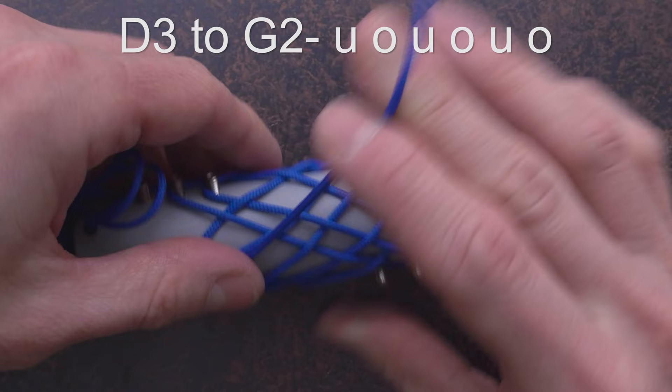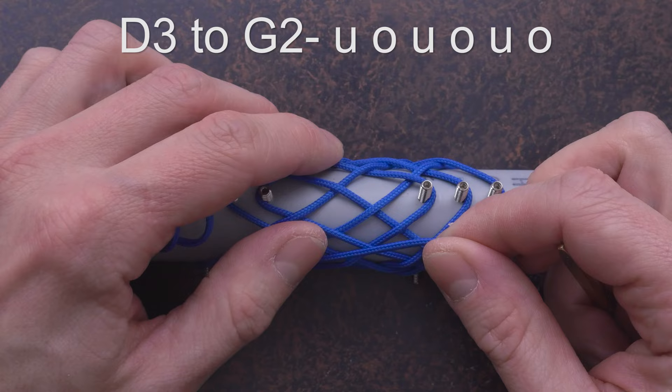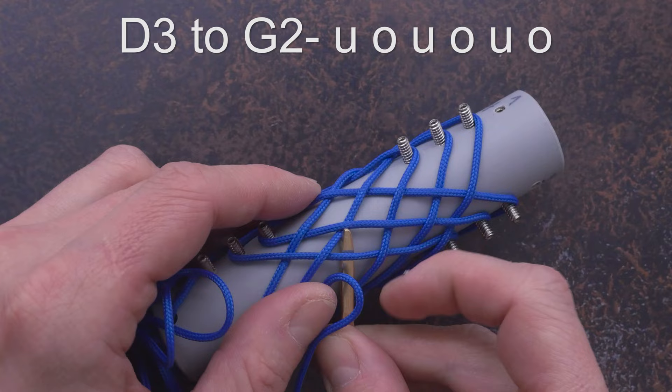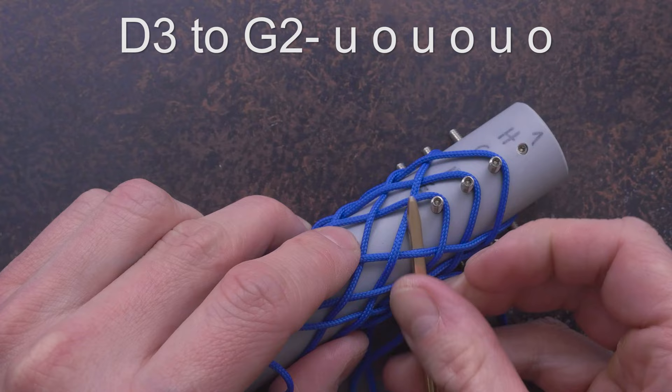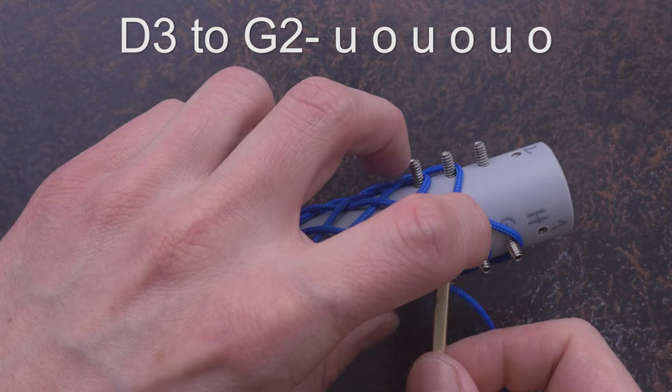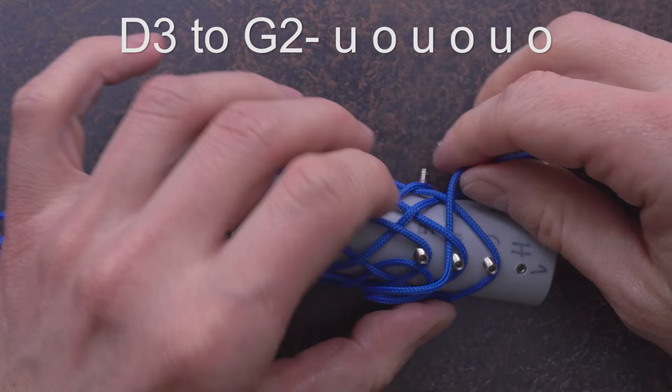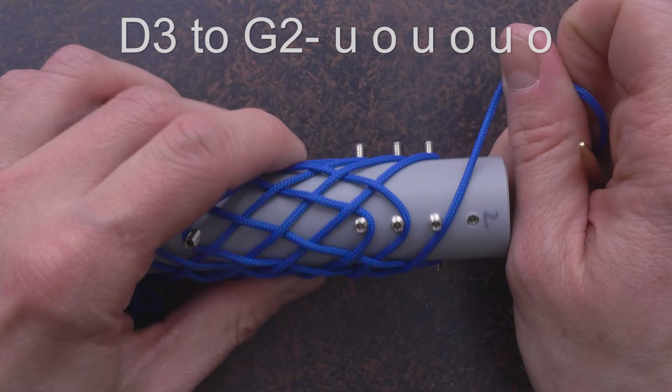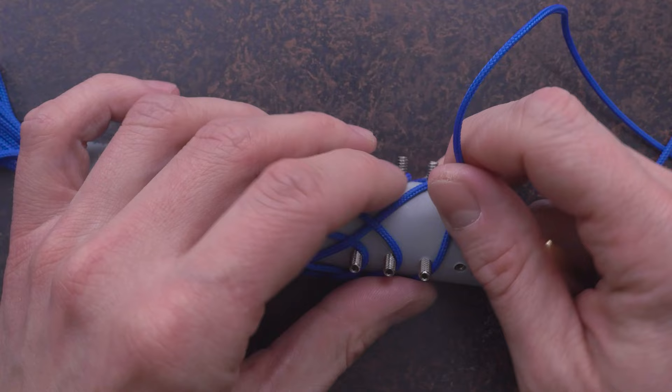Reaching D3, from D3, we now pass to G2, starting under, over, under, under over, under, and finally over, reaching G2.